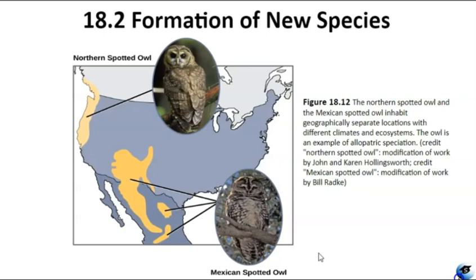Dispersal involves a few individuals of the species moving to a new geographic area, while vicariance occurs when natural circumstances physically divide organisms. Numerous examples of allopatric speciation have been observed. For instance, along the west coast of the United States, we have distinct subspecies of spotted owls with genetic and phenotypic differences between the northern spotted owl and the Mexican spotted owl. Scientists discovered that the greater the distance between two once-same species, the higher the likelihood of speciation. The northern owl population experiences cooler climates compared to the southern population, and the ecosystems, behaviors, hunting habits, and prey choices differ between the two populations, leading to evolved differences and ultimately speciation.